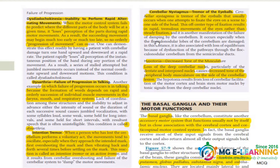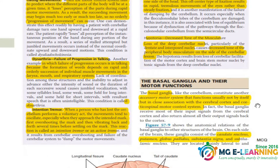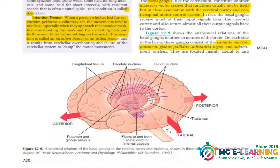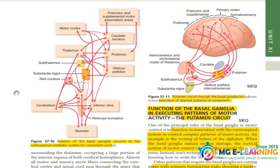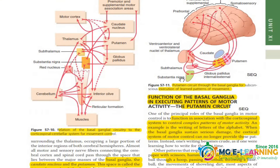Now coming towards the other section of this chapter — the basal ganglia and its motor function. What is the basal ganglia? First of all, its location — this is important for your MCQs. This diagram helps in understanding the anatomical relation of the basal ganglia to the cerebral cortex. This figure is not very easy so you can neglect it, but the upcoming figures are very very important.